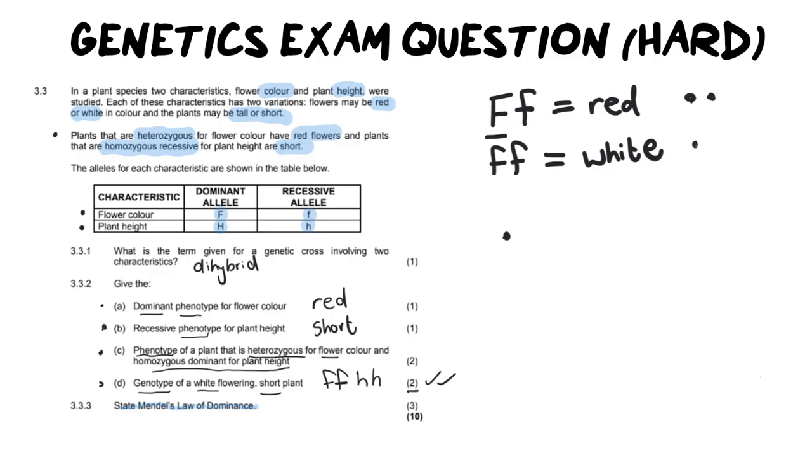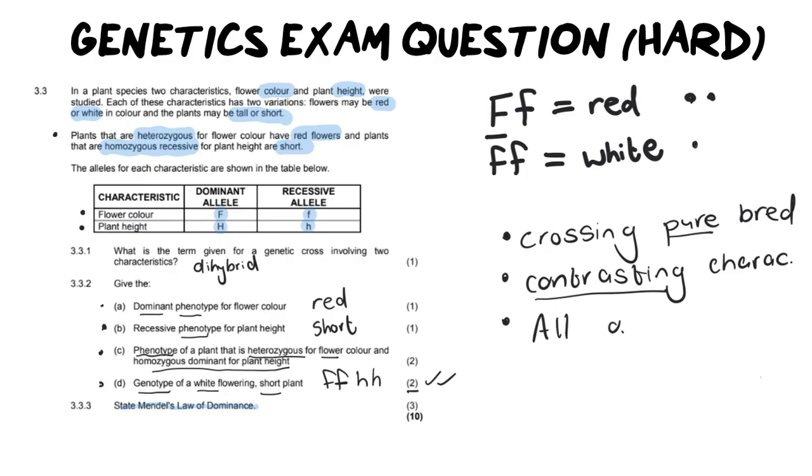Number one, we need to speak about crossing a purebred. So when crossing a purebred individual with contrasting characteristics, what that means is purebred means a pure red flower and a pure white flower. That is their purebred and their contrasting characteristics, red and white.